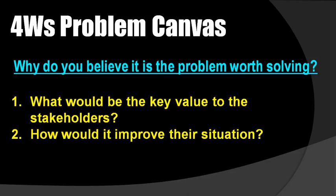Next is 'why' — the fourth block. Why do you believe it is a problem worth solving? You have listed down all the major elements affecting the problem from the three previous W's. Now it is convenient to understand who the people are that would benefit from the solution. Those three canvases become the base of 'why.' In the why canvas, think about the benefits which the stakeholders would get from the solution, and how you would benefit them as well as society.